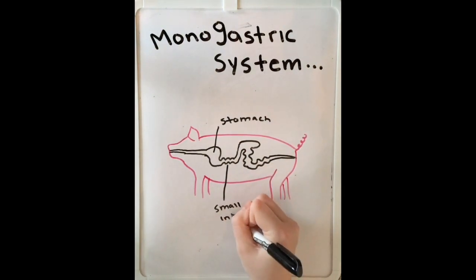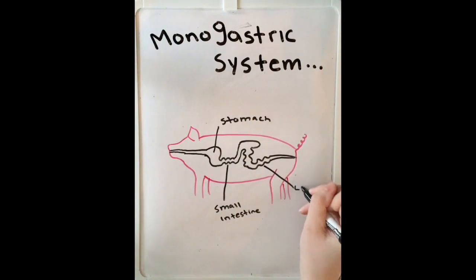And as you can see, being labeled right now is the stomach, small intestine, as well as the large intestine.